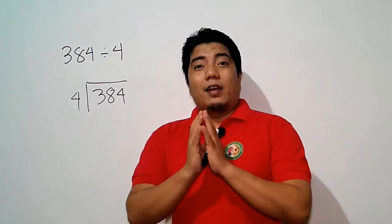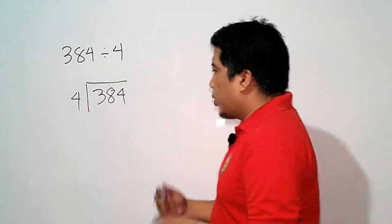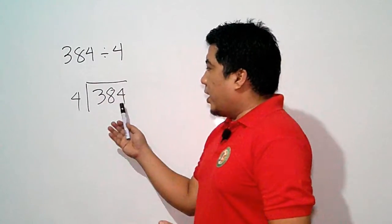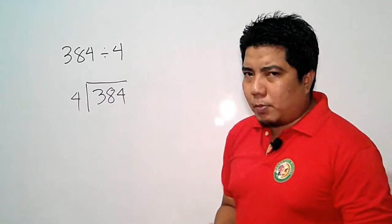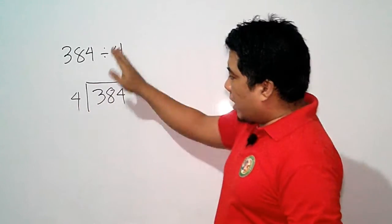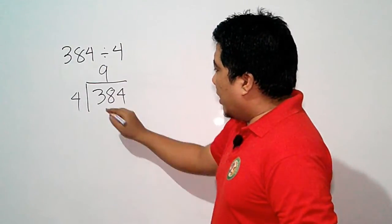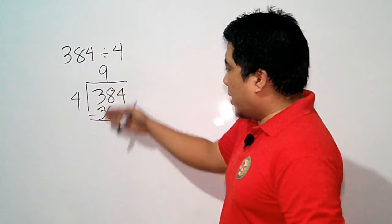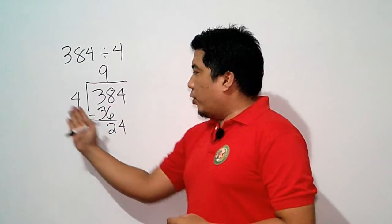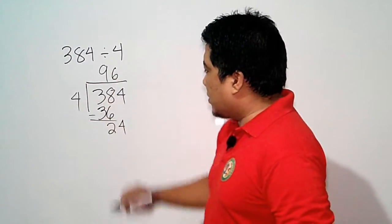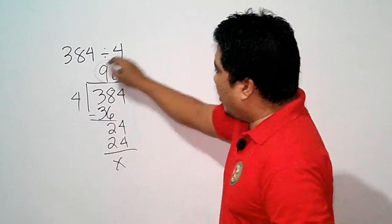In the long division method, we divide the number inside the dividend through the divisor digit by digit. We start with 3 divided by 4 — not possible — so we consider the next digit: 38. 38 divided by 4 is 9, and 9 times 4 is 36. Subtract: 38 minus 36 gives 2. Bring down the last digit 4, giving 24. 24 divided by 4 is 6, and 6 times 4 is 24, leaving no remainder. So our quotient is 96.